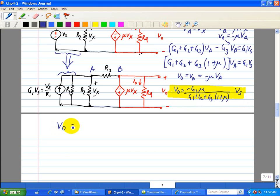V0 is equal to minus G1 over mu divided by G3 1 plus mu. When G1 plus G2 is a lot smaller than G3 1 plus mu.